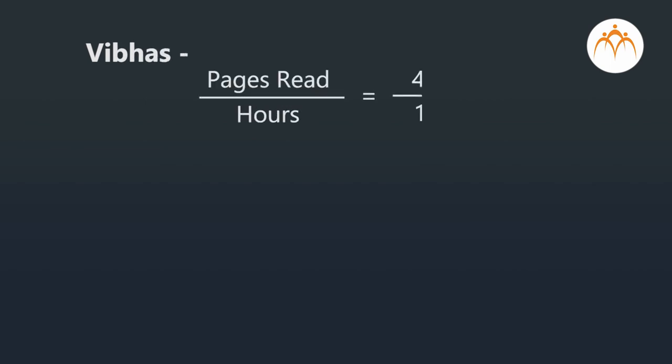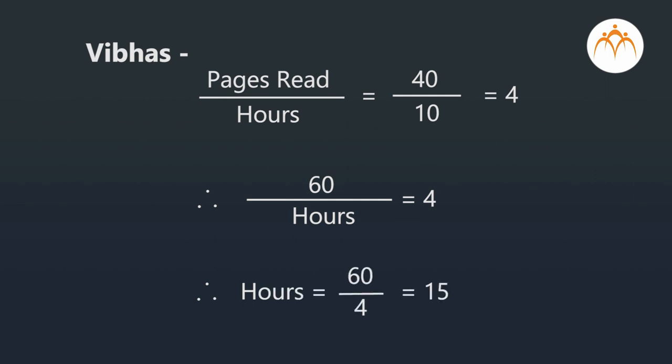Now for Vibhas: pages read divided by hours equals 40 divided by 10, which equals 4. As the total pages in the book is 60, we put pages read as 60: 60 divided by hours equals 4. So hours equals 60 divided by 4, which equals 15. That means Vibhas will complete the book in 15 hours. So Dada, Vibhas will require 3 hours more than Akshay to complete the book. Very good, Sai — you are now able to solve these problems very nicely.